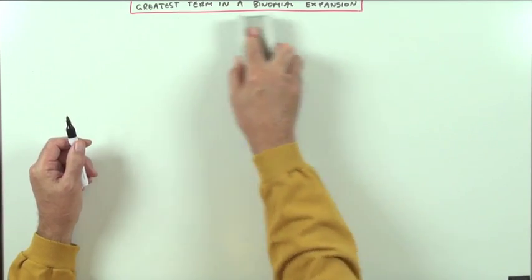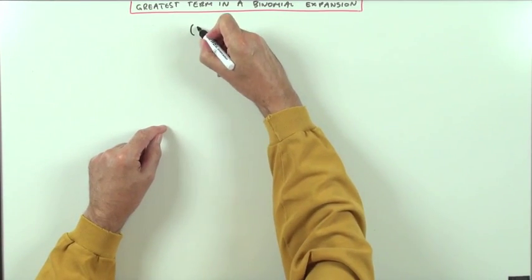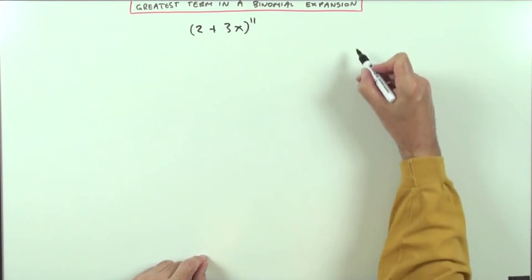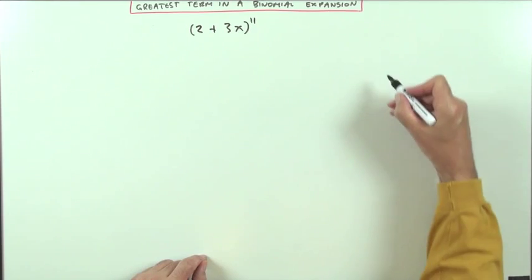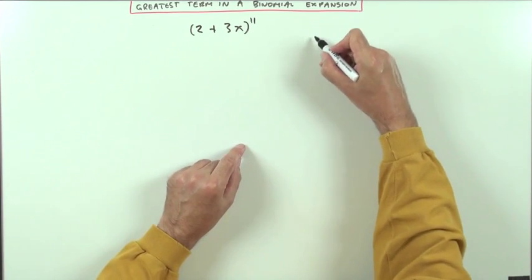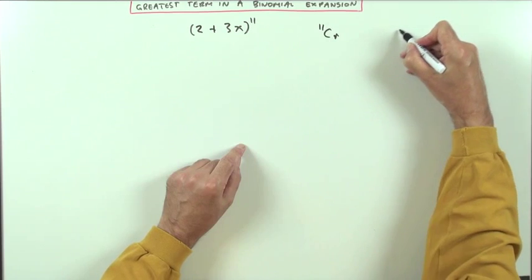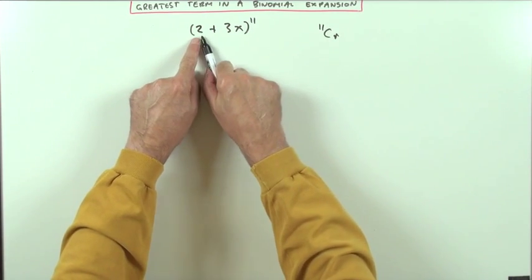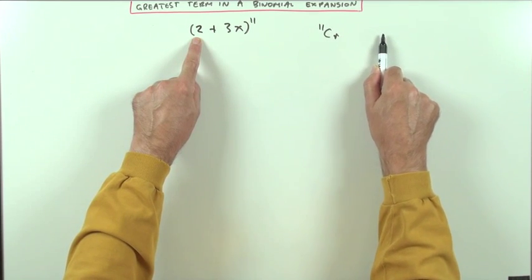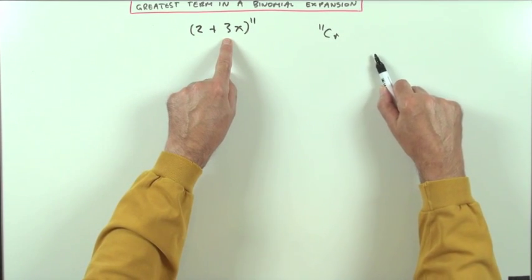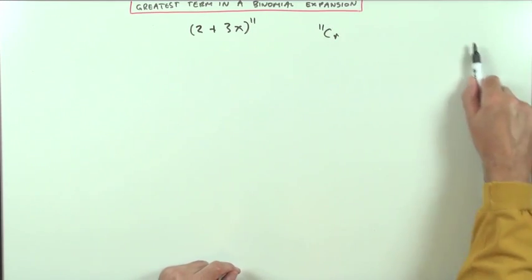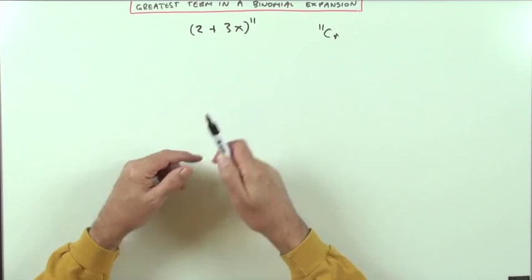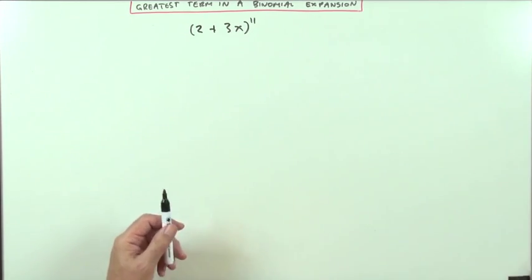But what would happen if instead of just having 1s, it was something like (2 + 3x) to the power of 11? Now the coefficients have been altered. Instead of it just being the binomial coefficients - the C(11,r)s that rise up and then fall down - they're going to be weighted. There'll be a 2 to the power of 11 that drops to 2 to the 10, and a 3 to the 0 that gradually rises through the powers of 3. They're going to skew the results. How would you find the greatest term without writing all 12 of them out?